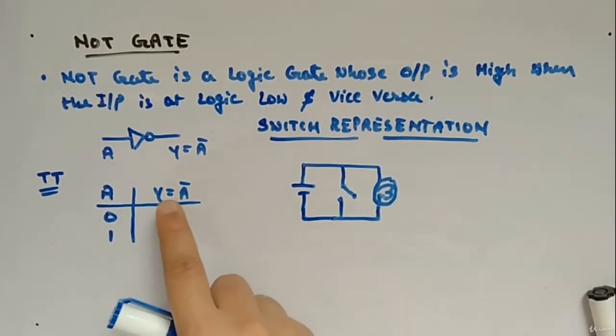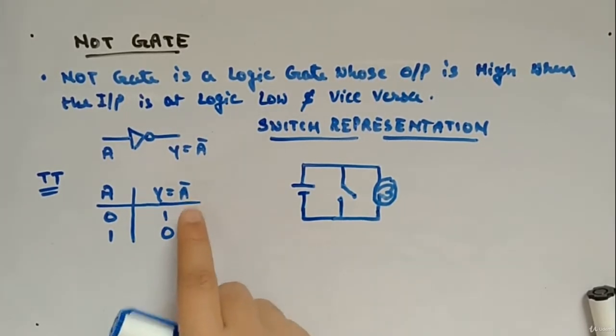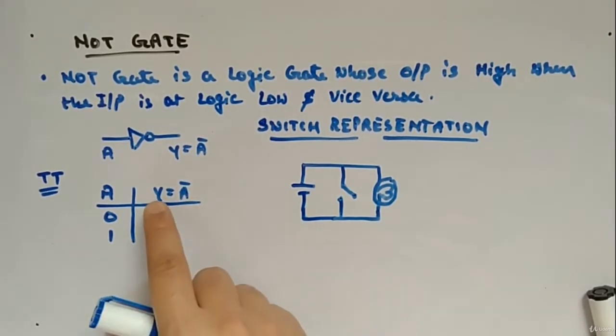Now let's look at the NOT gate. A NOT gate is a logic gate whose output is high when the input is at logic low and vice versa. So if the input is high, the output will be low, and if the input is low, the output will be high. It's kind of an inverter — sometimes we also call the NOT gate an inverter.